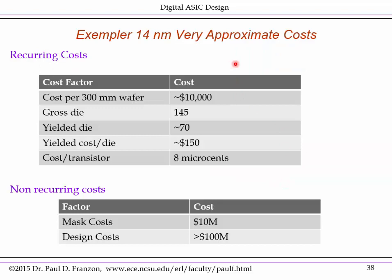Here's a very approximate cost estimate just for the Pascal chip, not dealing with the package or HBM memory. At 14nm, the cost per wafer would be very roughly $10,000. You get about 145 die per wafer, less than half of which yield, giving a yielded cost per die of $150. The cost per transistor has gone down somewhat to 8 µcents — a significant reduction, defining Moore's Law. To reach high volume, just the mask cost would be roughly $10 million, and design costs are also high.